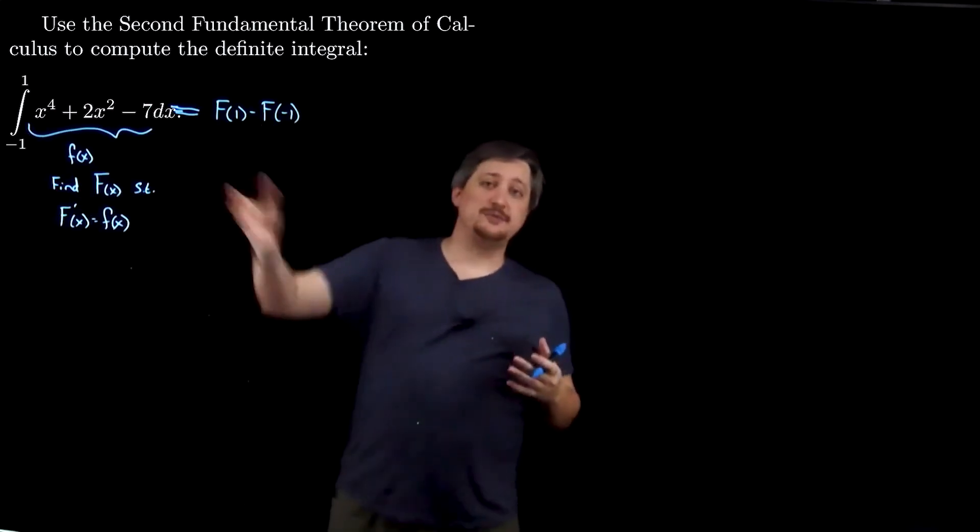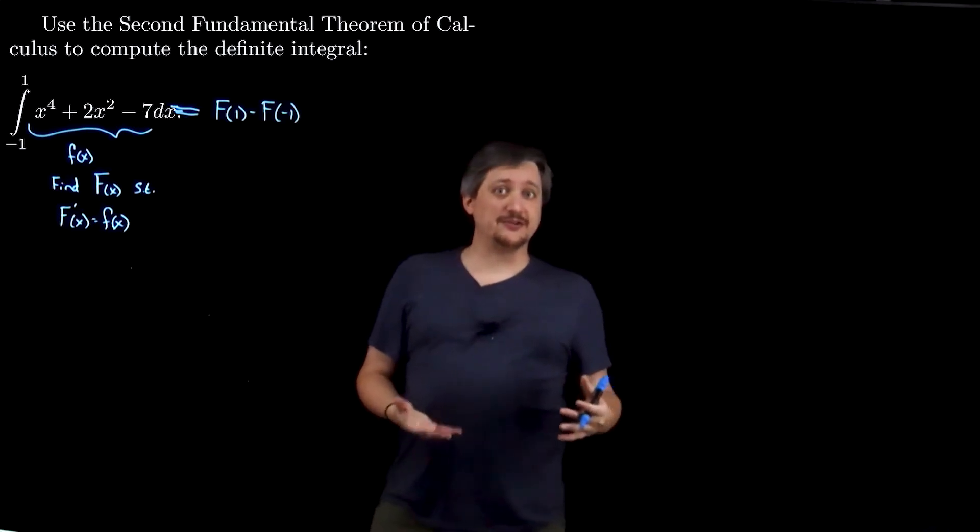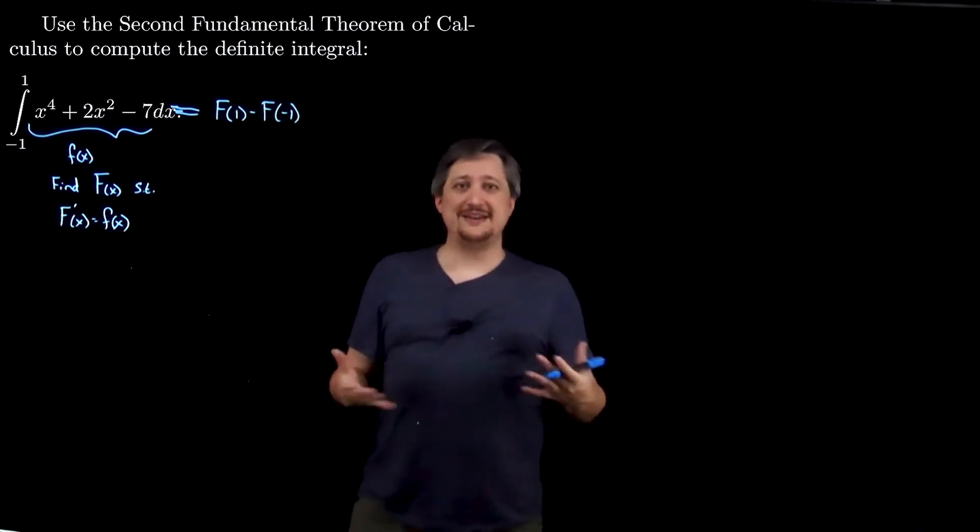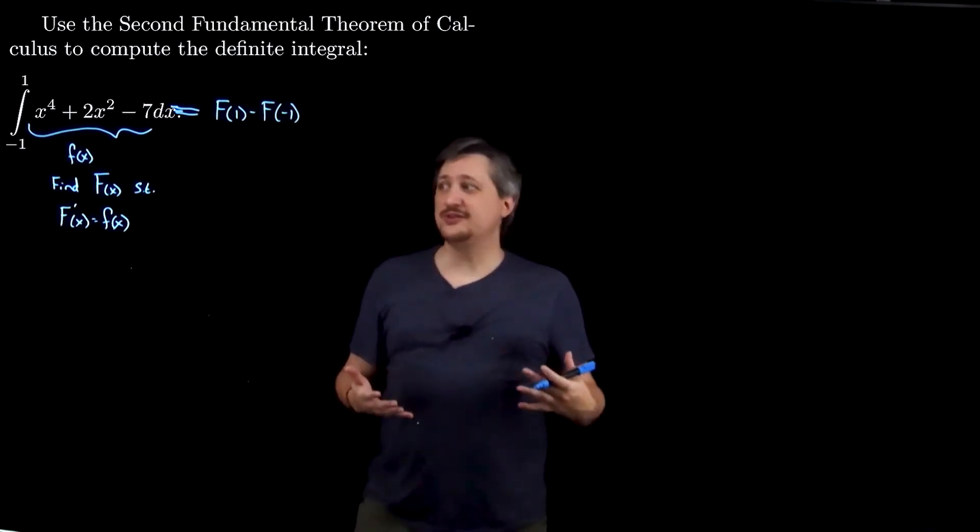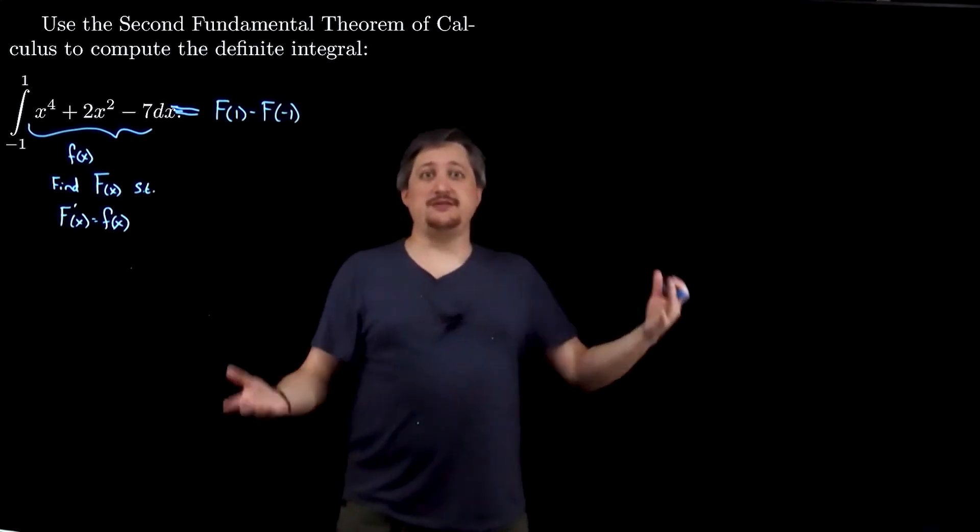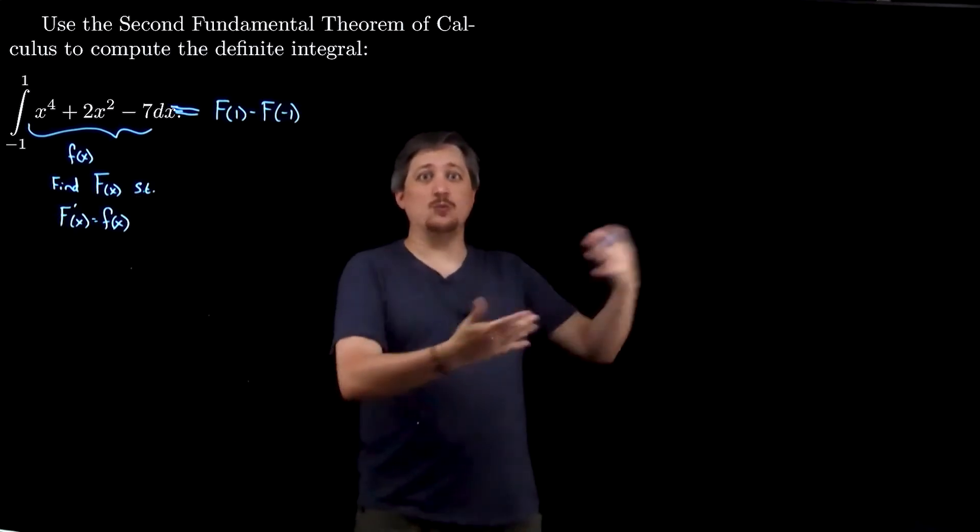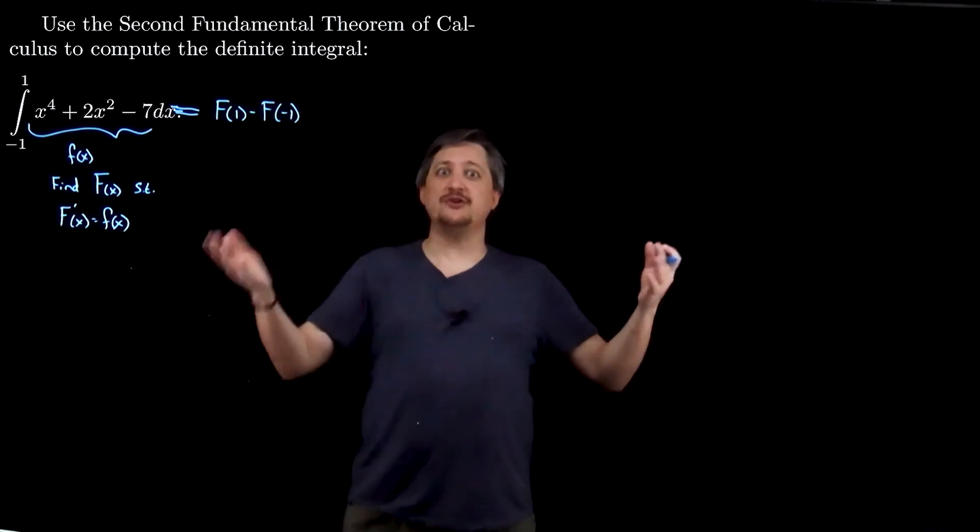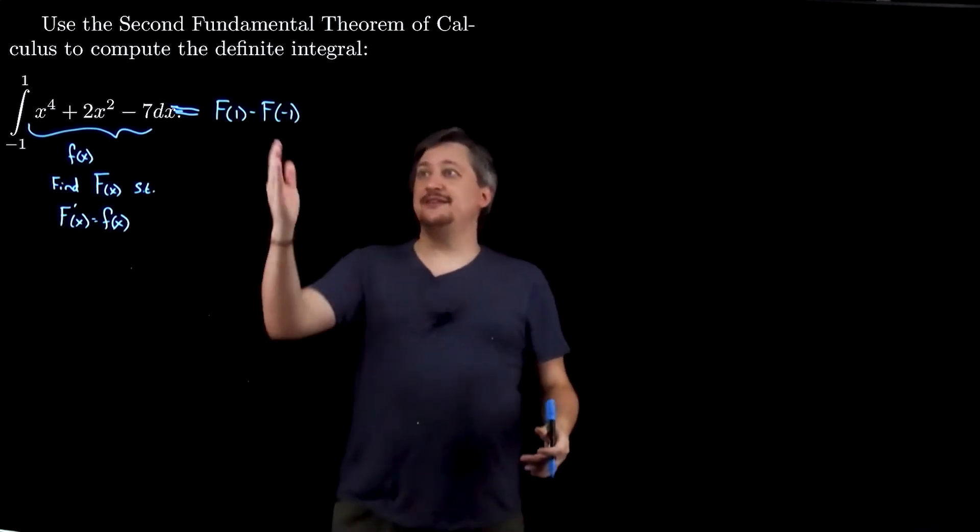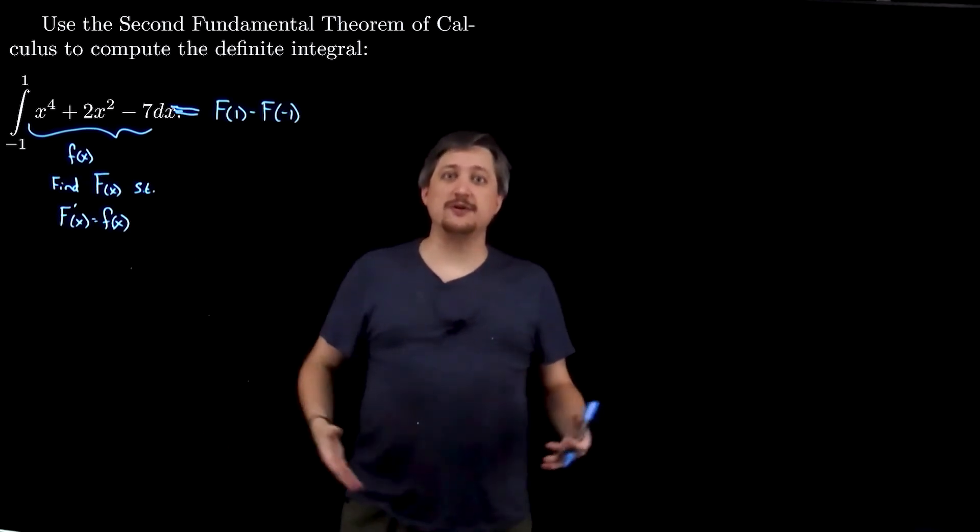And this makes sense because the first fundamental theorem of calculus, remember, told us that in some sense it doesn't matter which antiderivative we choose, so this is telling us just pick one. We don't care which one, just get one of them, whichever one you like, and then you can still do this and it will still work, right?